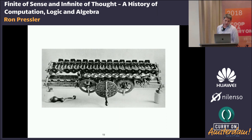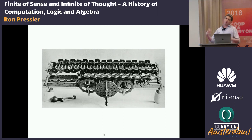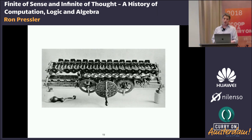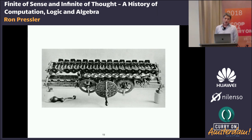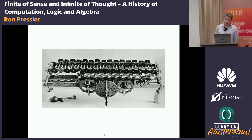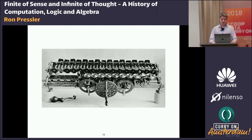Here we come to a surprising turn of events, because while Leibniz's plan for the algebraization of logic was known through his correspondences — the general idea of the art of combination, the lingua characteristica, and the calculus ratiocinator, especially in the German-speaking world — he did not publish any of his particular work on the art of combinations, as he considered it unfinished. Instead, they lay hidden in the library of Hanover, where he worked, for nearly 200 years, and their partial publication only began in the 1840s.